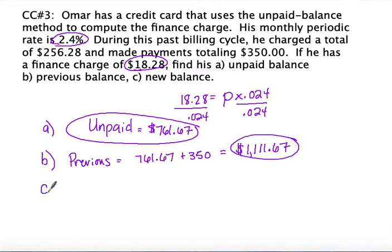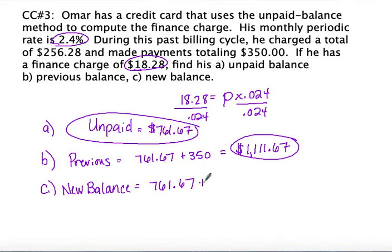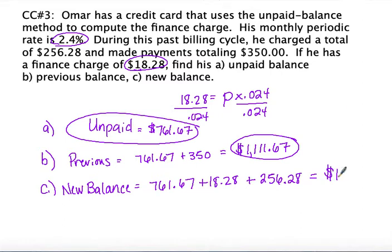Now we calculate the new balance. We start with the unpaid balance of $761.67, add the interest of $18.28 that was given to us, and also add the new charge of $256.28. That gives a new balance on the credit card of $1,036.23.